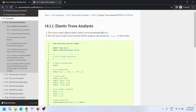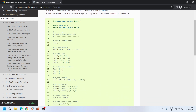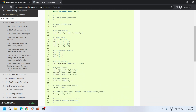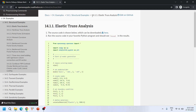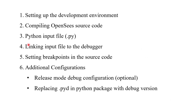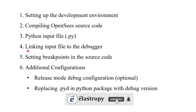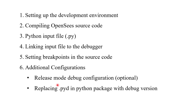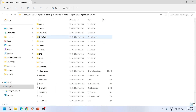We also need to download a Python input file. In this tutorial we are going to use the basic elastic truss analysis example presented on the OpenSees documentation website, example number 14.1.1. The next steps — linking the input file to the debugger, setting up breakpoints in the source code, additional configurations such as release/debug mode configuration, and replacing the .pyd file — we will see these steps live. This is our source code that was successfully compiled.